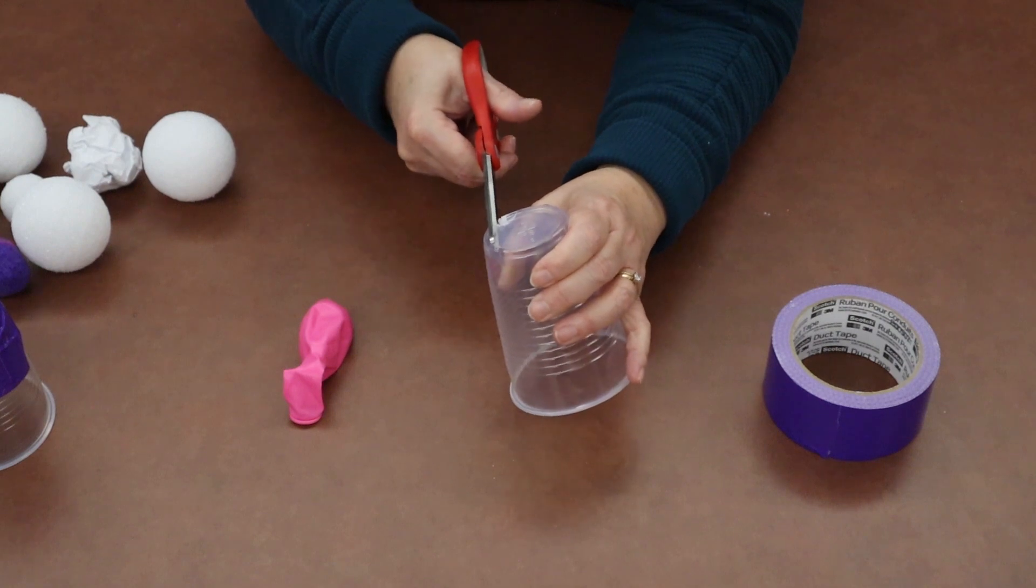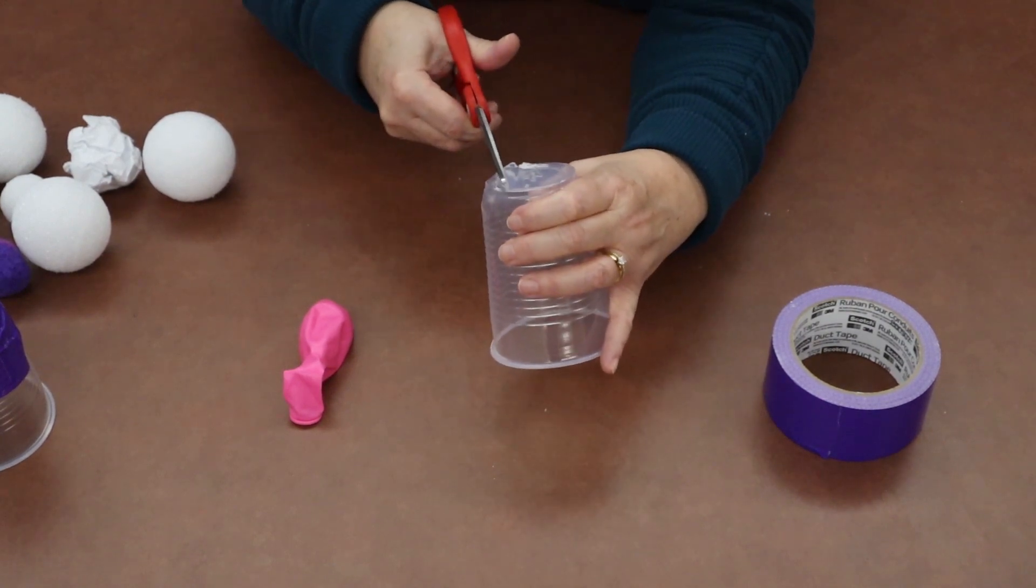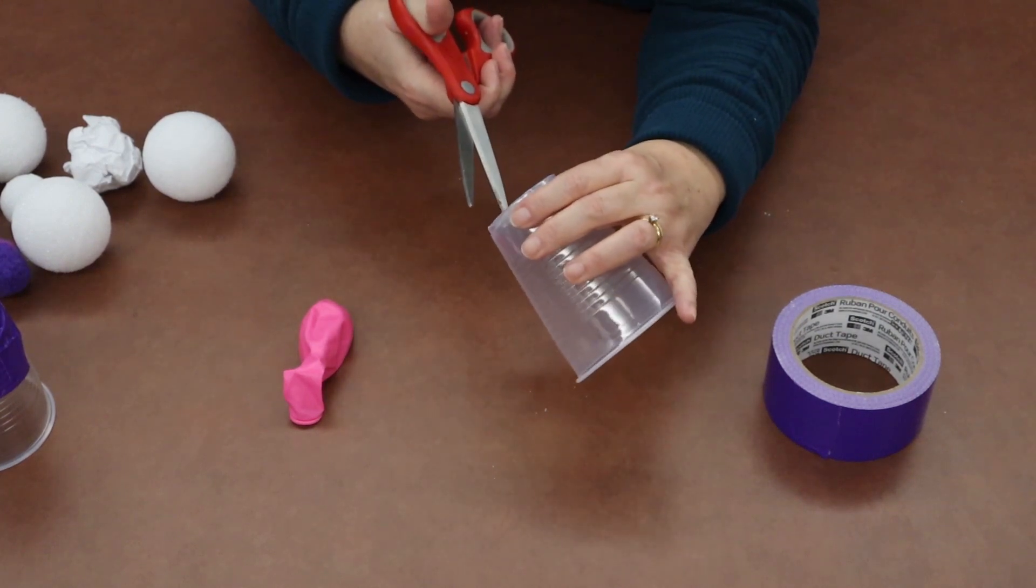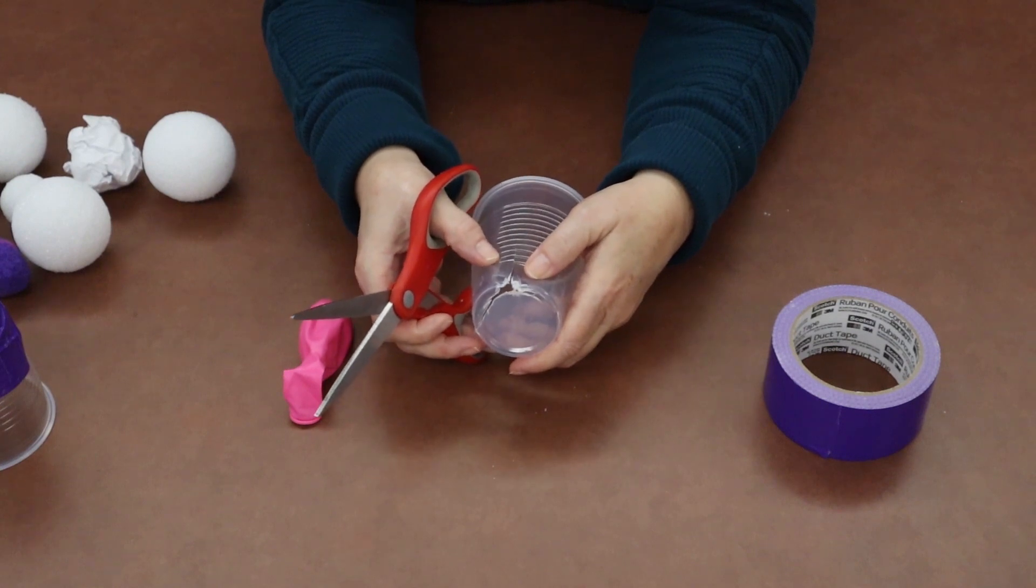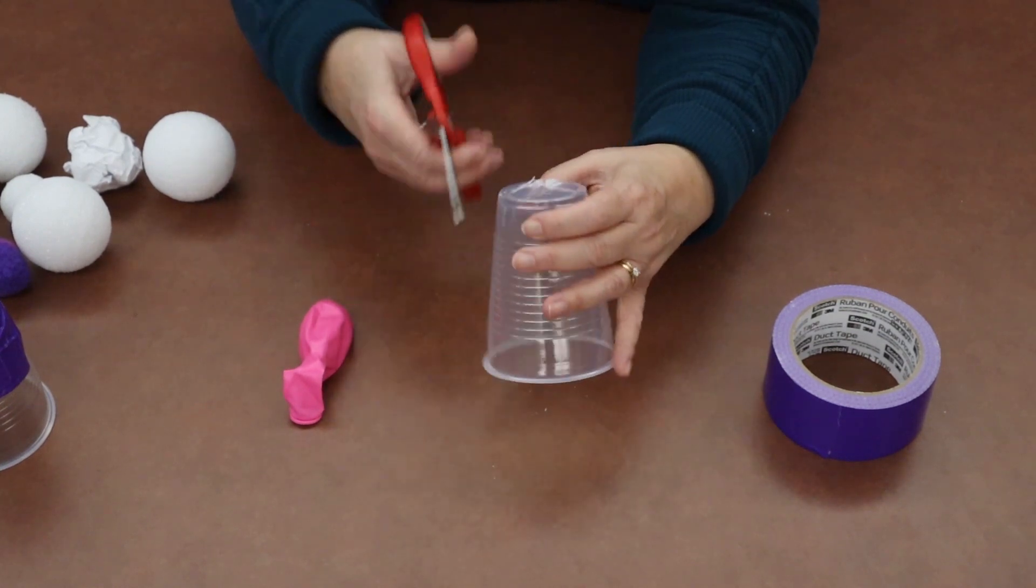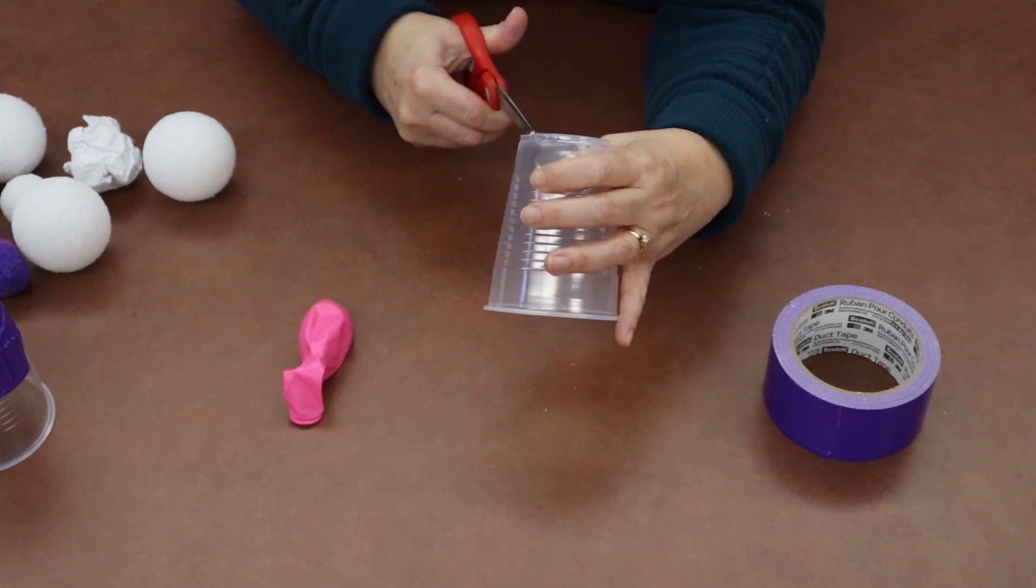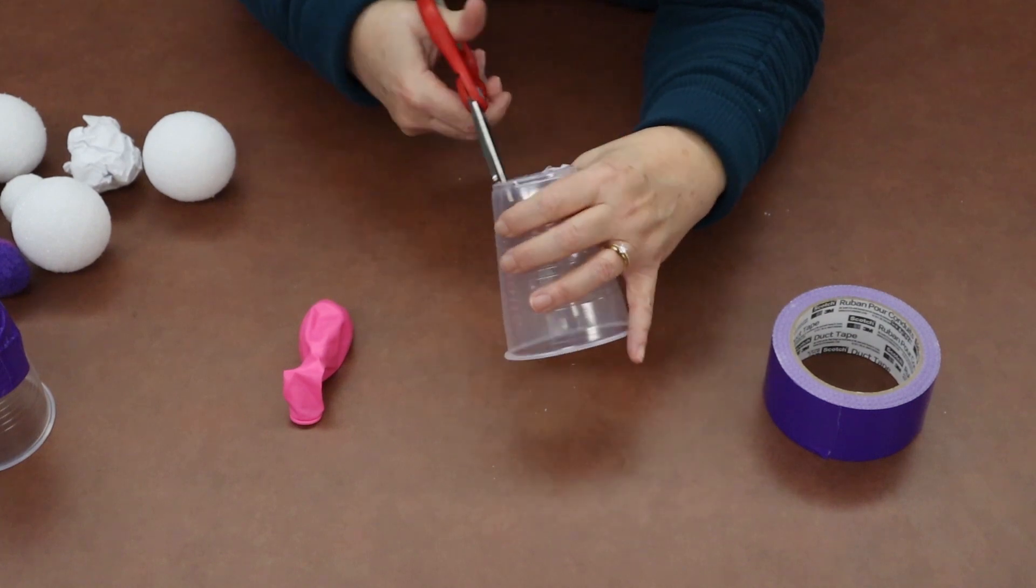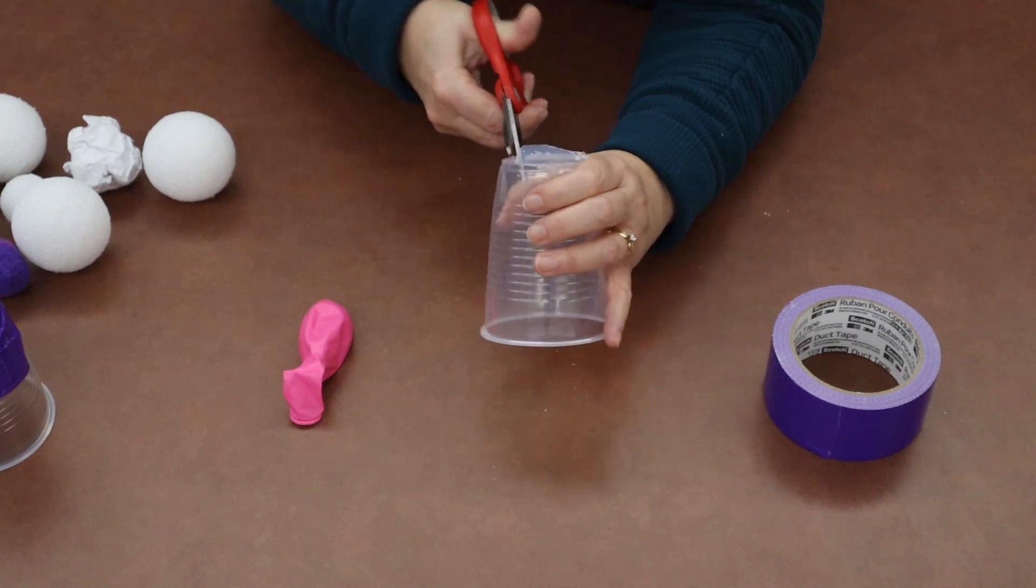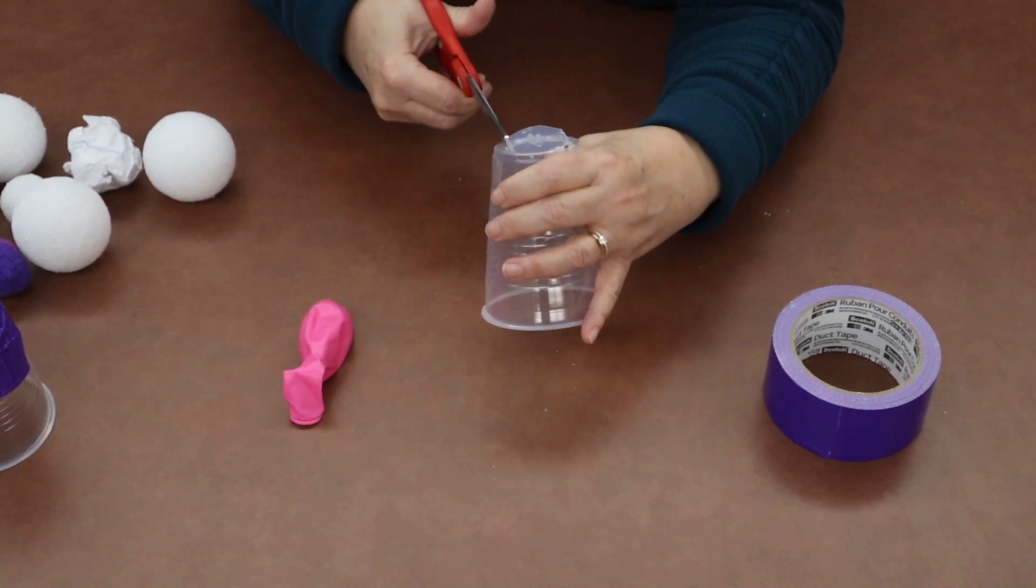So just take your scissors, cut out the bottom, and it will take a minute and it's kind of tricky. And if, like me, your cup cracks, just take some duct tape and tape over that and you're done cutting the bottom out. And that's probably just part from cutting too far down the side. And again, this is going to be the trickiest part of your project.